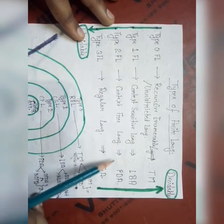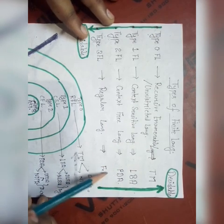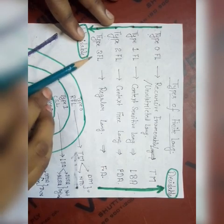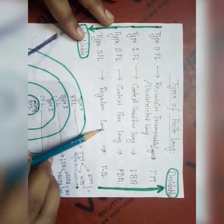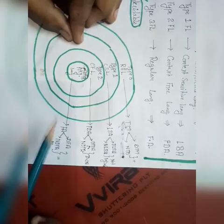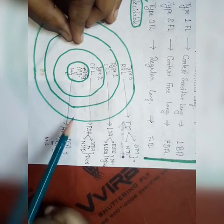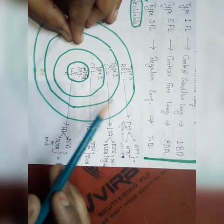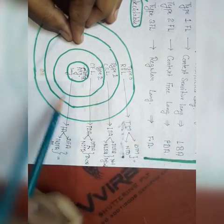Type 1 language is context-sensitive language, which is accepted by pushdown automata. Type 3 formal language is regular language, which is accepted by finite automata. I have prepared a diagram through which we can clearly understand all the concepts of formal language.